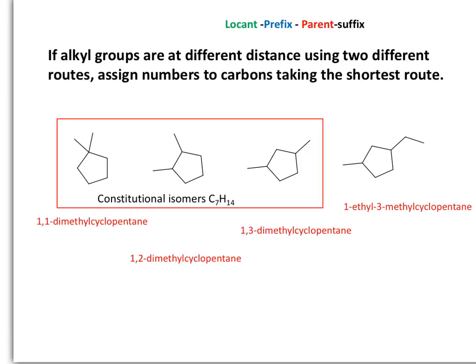When we have monosubstituted cycloalkanes, we do not need to state the position of the alkyl substituent. In this case, we are showing a disubstituted cycloalkane, so it is important to state the positions of those substituents. In the first case, both methyl groups are within the same carbon, making it 1,1-dimethylcyclopentane. These are constitutional isomers because they have the same number of carbons and hydrogens but different connectivity from atom to atom. The difference is in their carbon types — one has a quaternary carbon, while the other has two tertiary carbons.